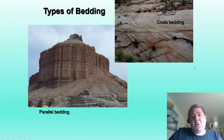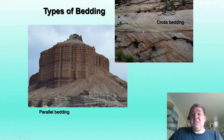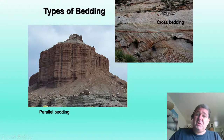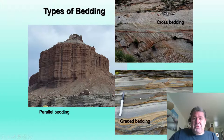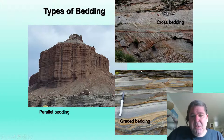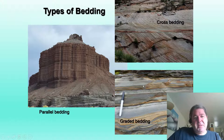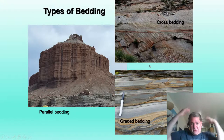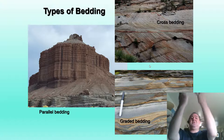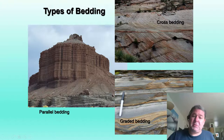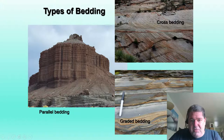These big, tall cross bedding sets — notice the size of the trees here — are likely indicating fossil slip faces on sand dunes. And then gradational bedding, going from coarse to fine, is called a Bouma sequence. This is essentially an underwater landslide, where as material goes shooting down underwater canyons, the heavier stuff settles first, and lighter material settles on top, so you get coarse at the bottom and fining upward toward the top.